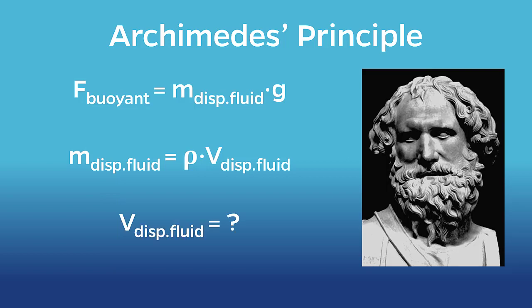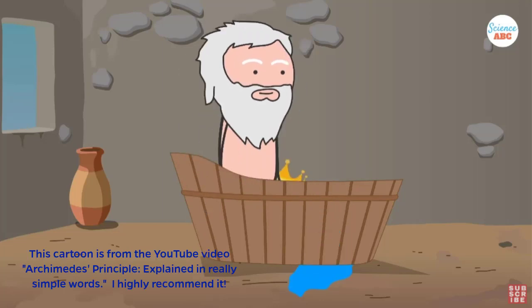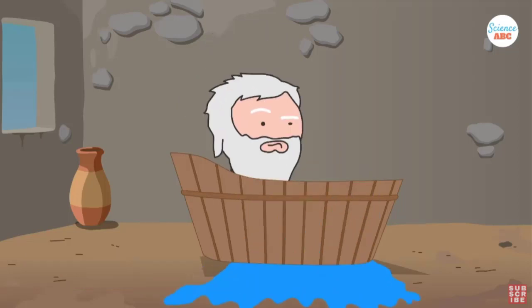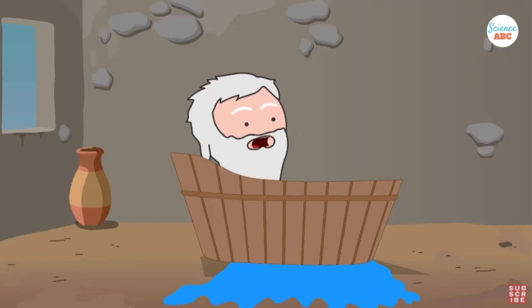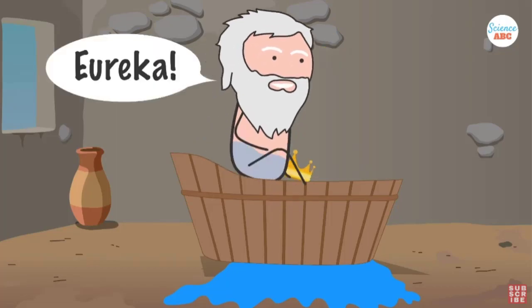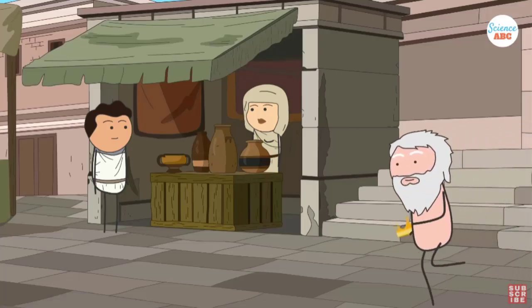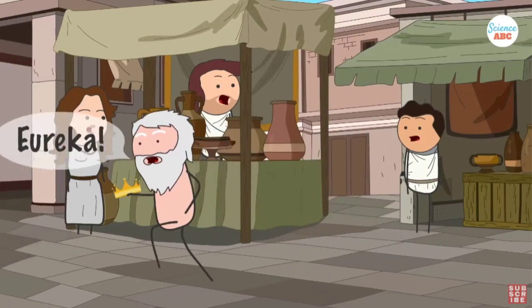But now it seems like we're just kicking the can down the road because we keep expressing the variable we don't know in terms of another variable that we don't know. What is the volume of the fluid displaced? Enter Archimedes again to save the day. Legend has it that Archimedes was getting into the bathtub when he observed that the water level rose when he got into the water. Further realizing that the volume of the displaced fluid is equal to the volume of the submerged object, he reportedly got so excited that he jumped out of the tub and ran naked through the streets of Syracuse, yelling Eureka! Who said that science wasn't exciting?